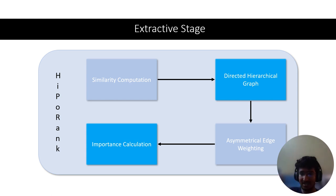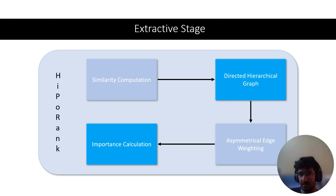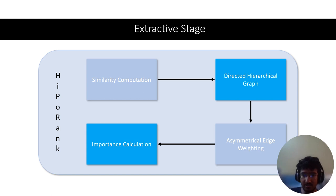There are two types of edges: intrasectional, where each sentence within a section is connected to every other sentence, and intersectional, where a sentence is connected to its section node, with only one sentence connected to all other sections for computational efficiency. Asymmetrical edge weighting means the weight from node 1 to node 2 is not equal to the weight from node 2 to node 1, based on a boundary function heuristic that sentences near section boundaries are more important. The importance score is calculated from these weighted averages and top-k sentences are greedily selected.